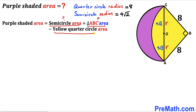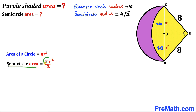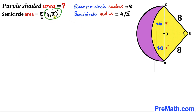Let's calculate the semicircle area. Recalling the circle area formula A = πr², the semicircle area is πr²/2. With r = 4√2: π/2 × (4√2)² = π/2 × 32 = 16π. So the semicircle area is 16π square units.